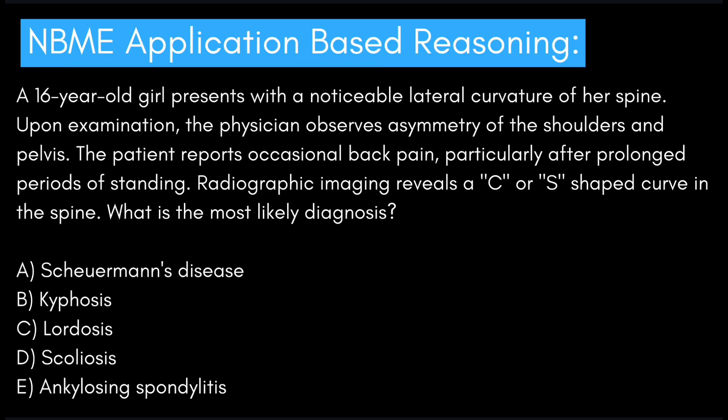Next question: A 16-year-old girl presents with a noticeable lateral curvature of her spine. Upon examination, the physician observes asymmetry of the shoulders and pelvis. The patient reports occasional back pain, particularly after prolonged periods of standing. Radiographic imaging reveals a C or S-shaped curve in the spine. What is the most likely diagnosis?